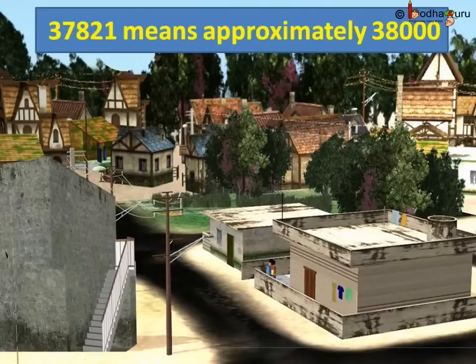Like we told 37,821 as roughly 38,000. So we rounded up 37,821 to 38,000. So here 38,000 is the rounded number and 37,821 is the exact value.